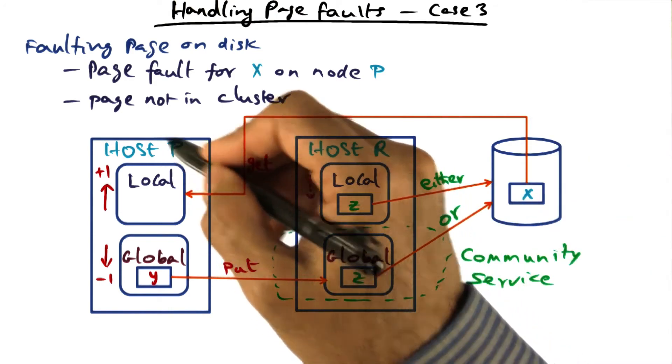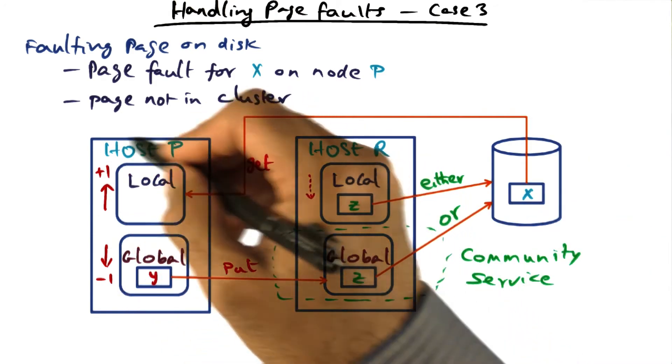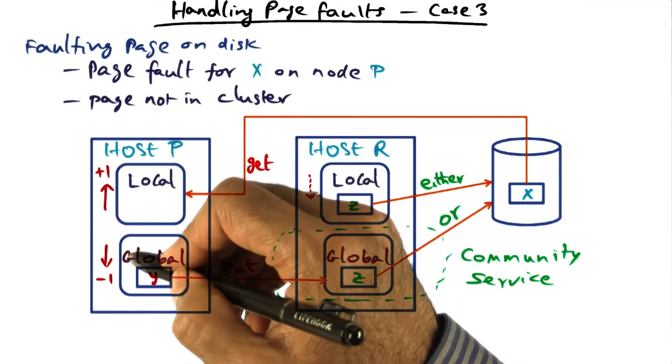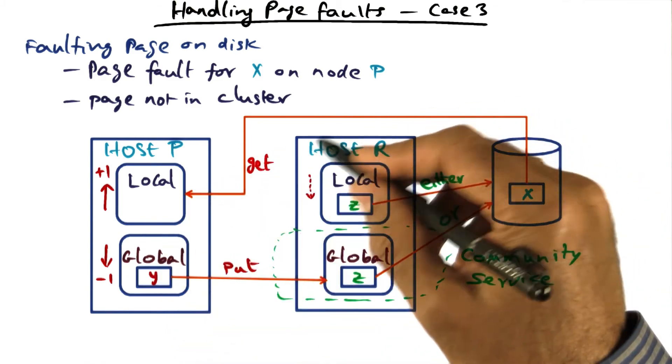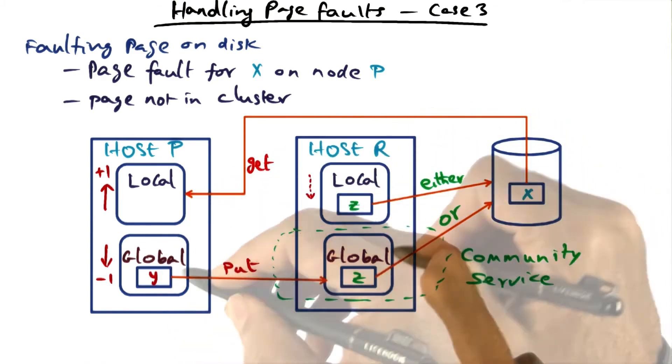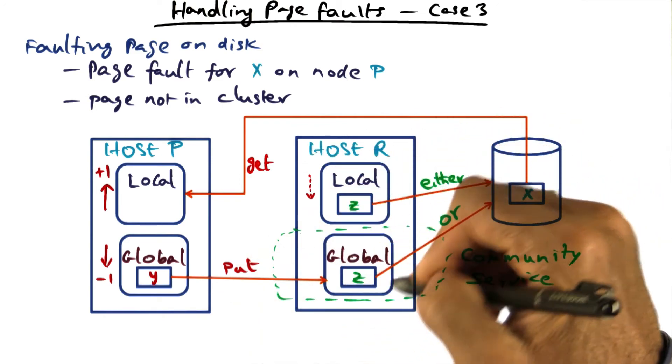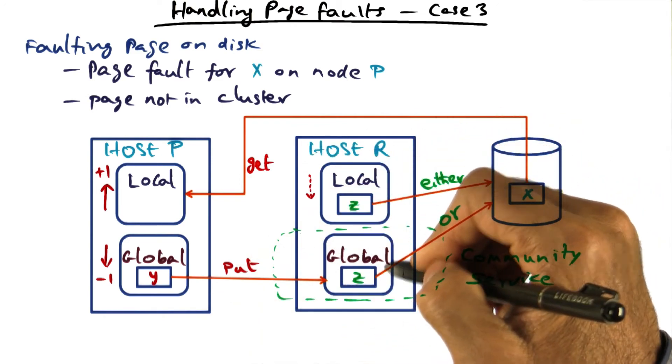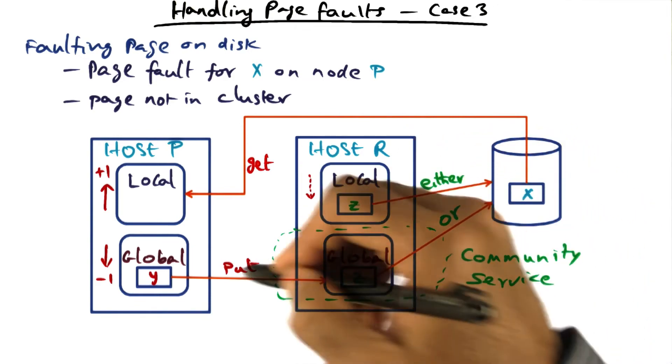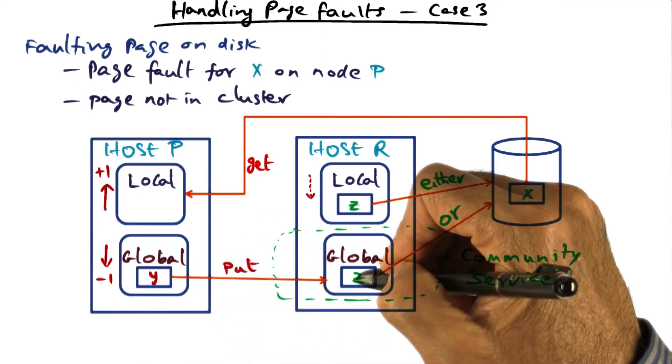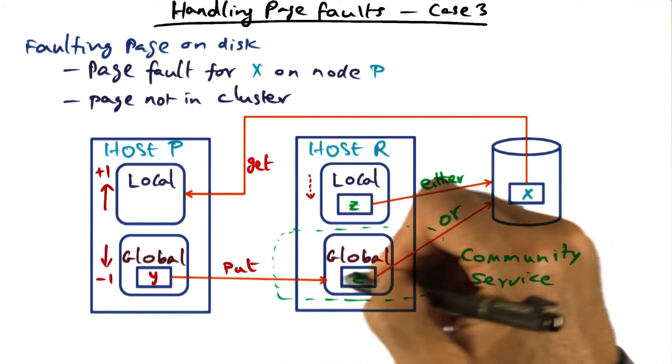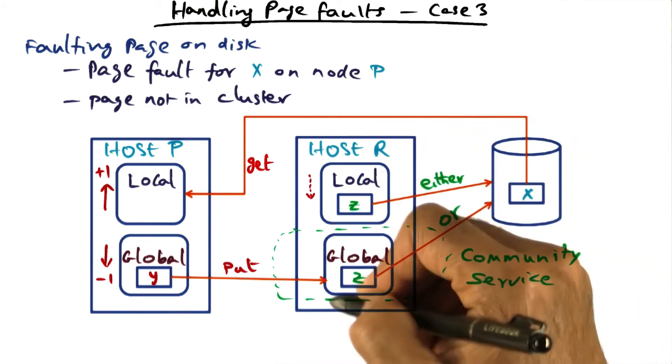So similar to the first case, in this case also, the local portion of the physical memory allocation on host P is going to go up by one, and the global portion is going to go down by one. What about host R? Well, it really depends. If the oldest page on host R happens to be in the global cache, then there is no change, because I am trading the old page z for another page that is coming in from host P. That is y that is coming in. In that case, there is no change in the allocation between local and global on host R.